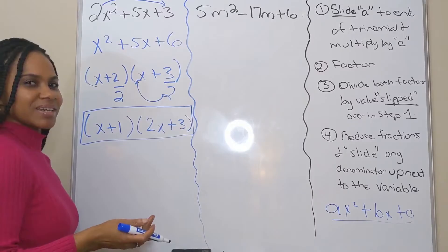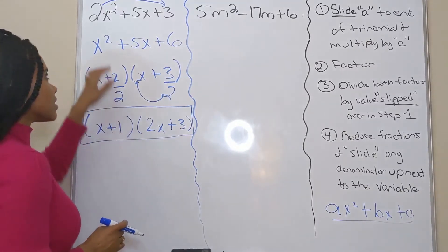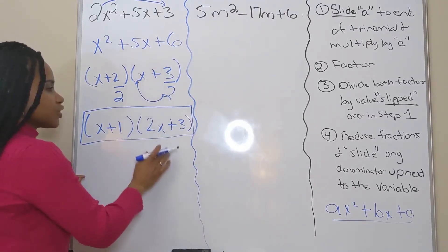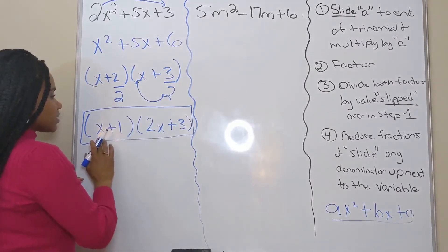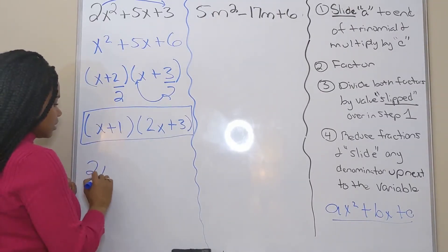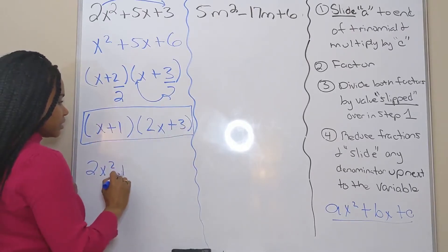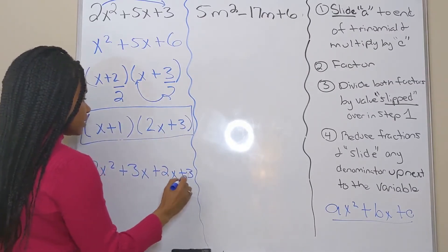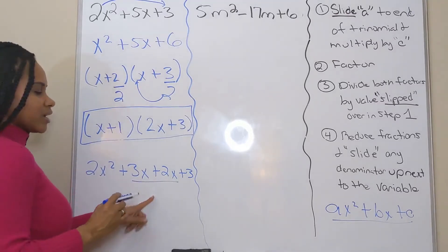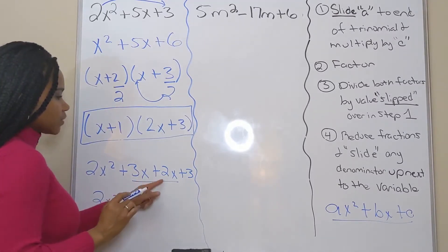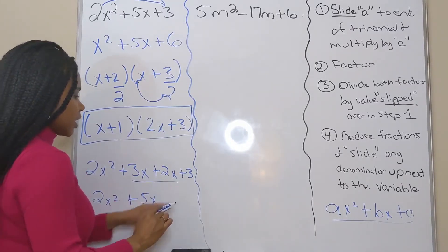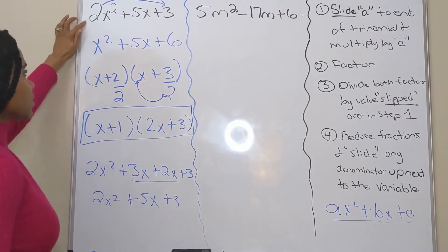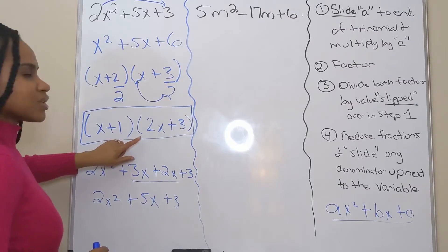All right, so how can we check it? Of course, we can just multiply it back through to see if we end up with the same expression here. So I'm just going to use the distributive property to multiply. So x times two x is two x squared, x times three, three x, one times two x, two x, one times three is three. All right, I have two terms in the middle that are like terms, I can combine them. Three x plus two x is five x. And I bring down my three. And then I see here that I have the same expression that I had in the beginning. So that shows that I factored it correctly.